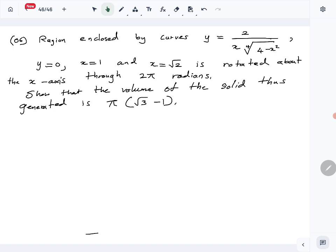This is rotated about the x-axis through 2π radians. We have to show that the volume of the solid generated is π times square root 3 minus 1. Let's recall the volume formula: that is integral from a to b, π times f(x) squared dx.